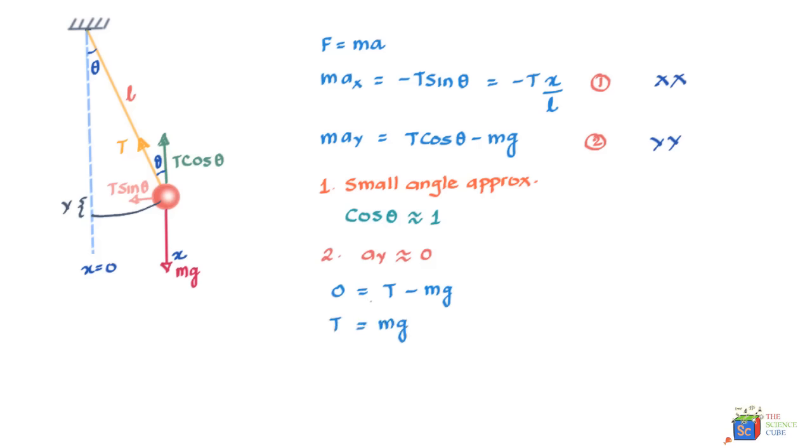If we substitute the value of T as mg in equation 1, what you get is m*ax, or acceleration in x direction, should equal -mg*X/L. What we can see is that m is cancelling off from both sides. And what we're getting is ax, or acceleration in x direction, is equal to -g/L*x.